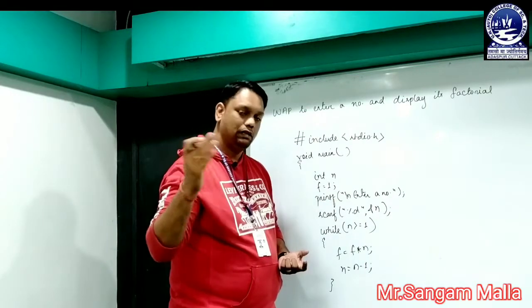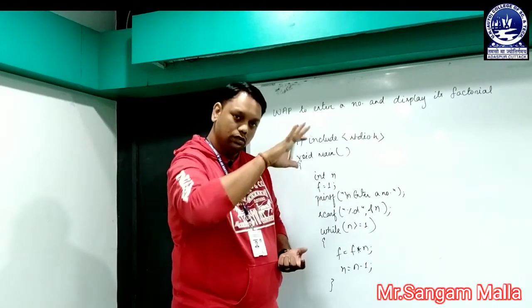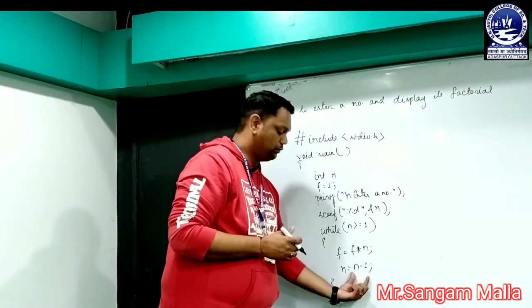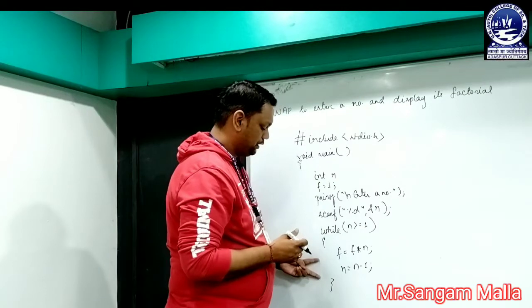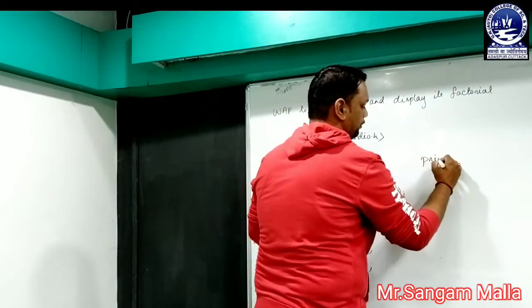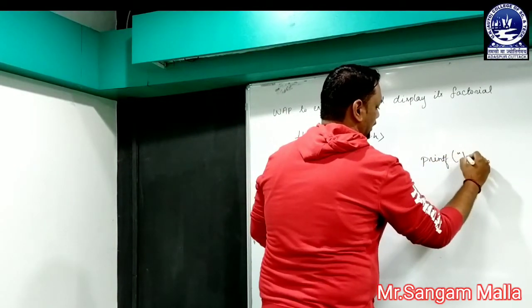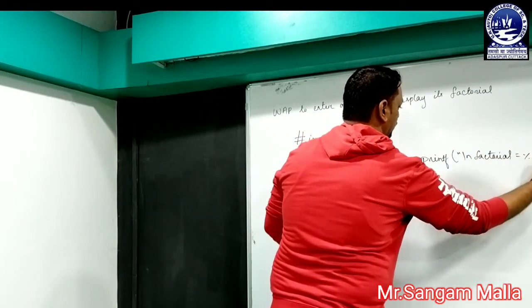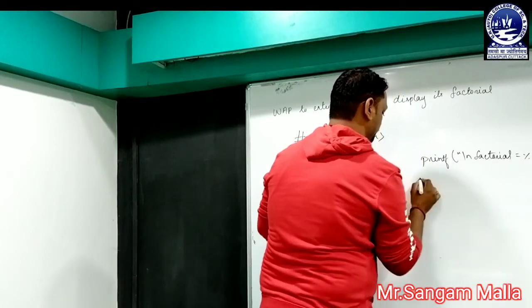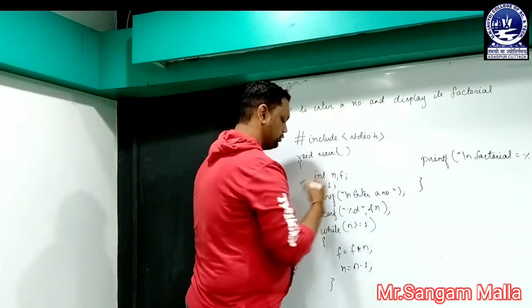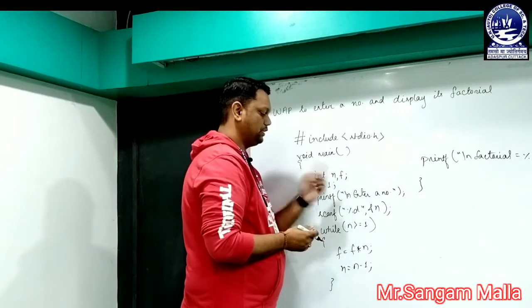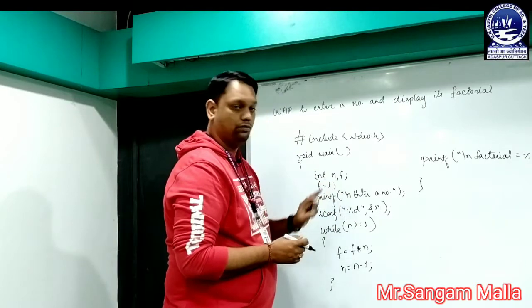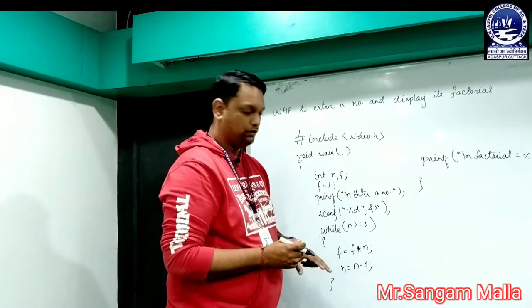The factorial of 4 is 4 into 3 into 2 into 1 — after 4, 3 is coming; then 2; then 1. The whole number is decremented by 1 each step. After coming out from the loop, we will print the value: printf "factorial = %d", f. Here we have used two variables: n for entering the number and f for calculating the factorial of the number.